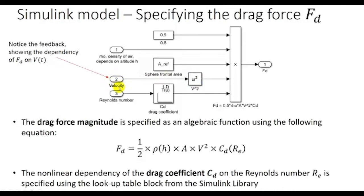Since the velocity takes only positive or negative values, squaring it produces the speed squared. The fifth input is the drag coefficient, which is a nonlinear function of the Reynolds number, and can be represented using a lookup table. This is a common Simulink block that allows the specification of any nonlinear function between the input and the output. Importantly, there is a feedback path from the velocity — the output of the integrator — back into the calculation of the aerodynamic resistance.